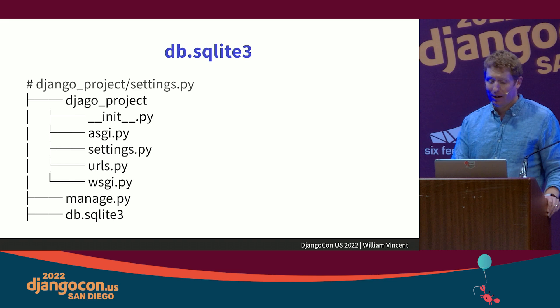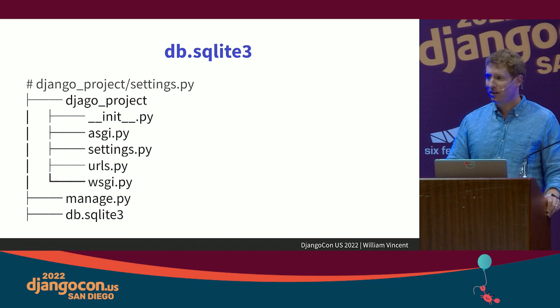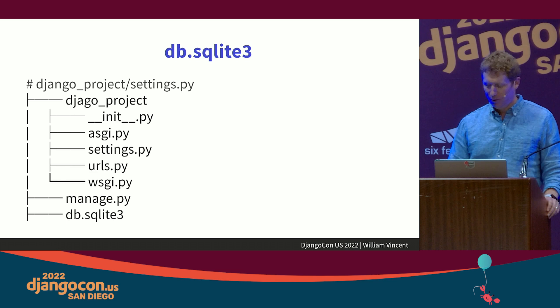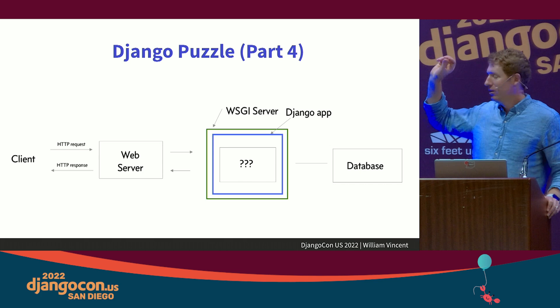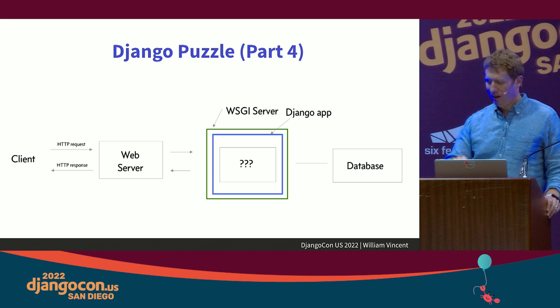When you run `migrate`, it initializes a new SQLite database — file-based, very convenient for development. You can use it in production (talk to Simon Willison for opinions on that), but most people won't. Adding another puzzle piece: client → web server → WSGI server → Django app → database.